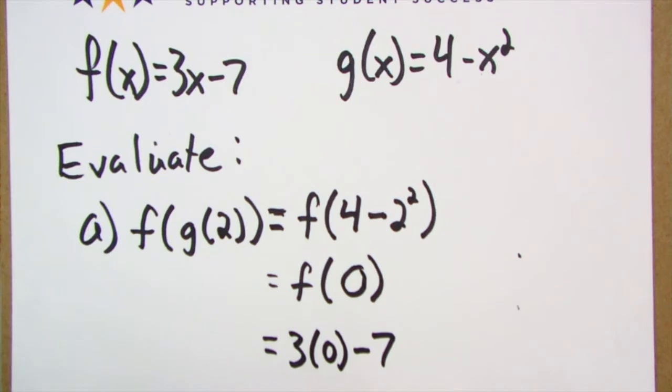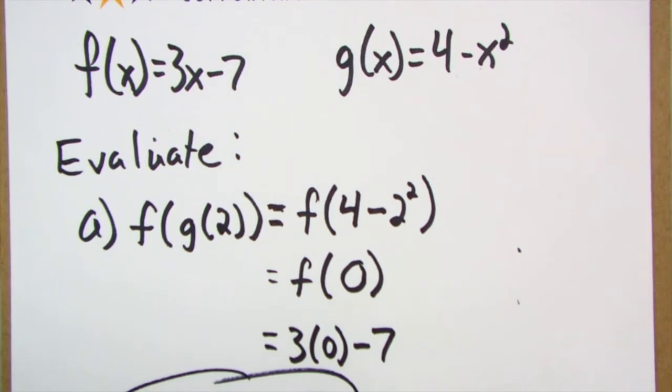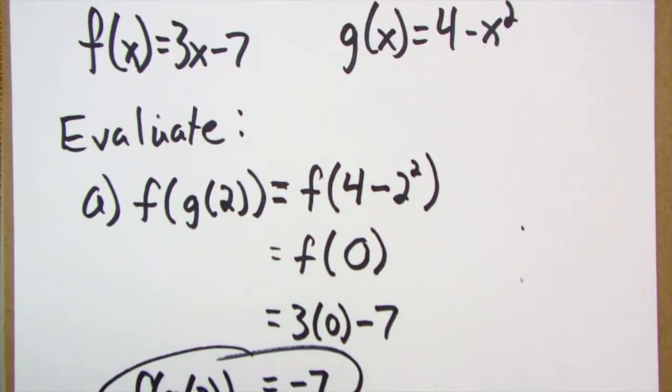And that's going to be 0 minus 7, which is negative 7. I just found that f of g of 2 equals negative 7. I wonder what would happen if we did g of f of 2.